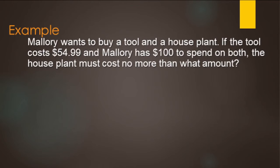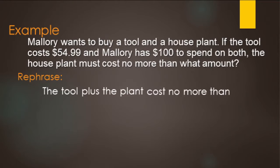So Mallory wants to buy a tool and a house plant, so she's going to the hardware store. The tool costs $54.99, and Mallory has $100 to spend on both. So the house plant must cost no more than what amount. With most of these, if you don't actually write it out, at least in your brain, rephrase it. So we have a tool that we're going to buy, and we're also going to buy a house plant, and the cost of those doesn't have to be exactly $100, but it can be no more than $100. So this case here, it's not equals 100. It's no more than 100. So now that we have it rephrased, we have it boiled down, we have the important information, at least in our brains, now we can write an inequality.